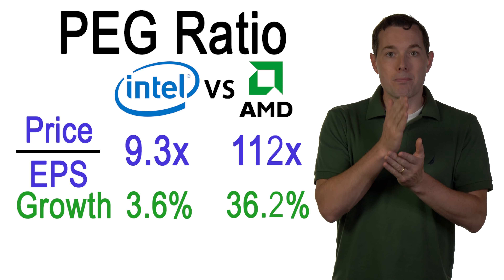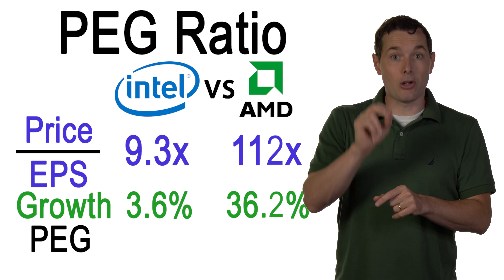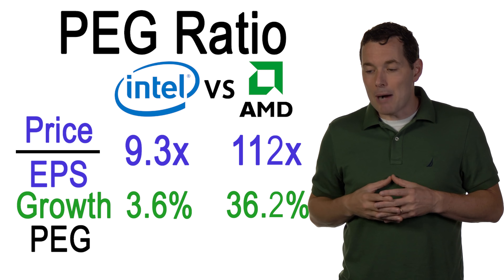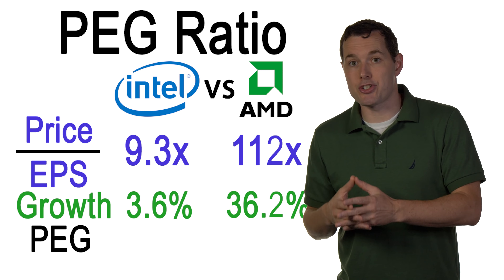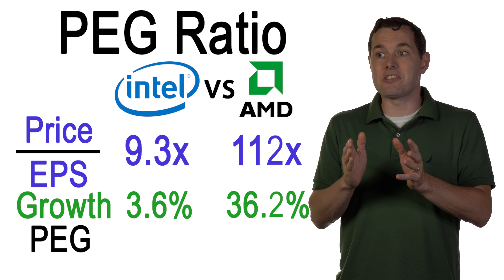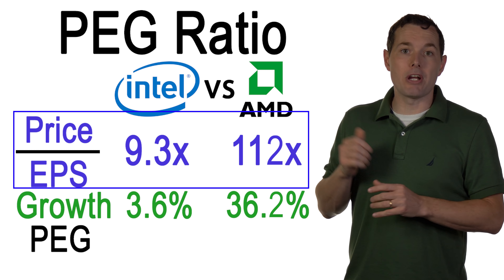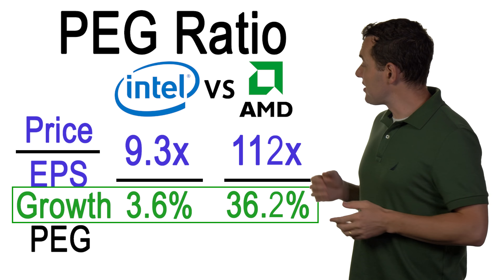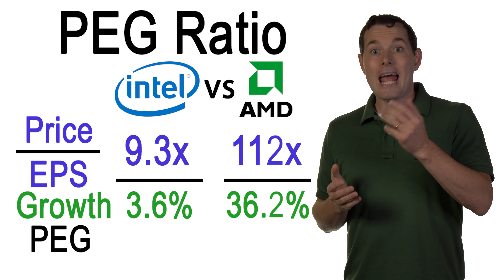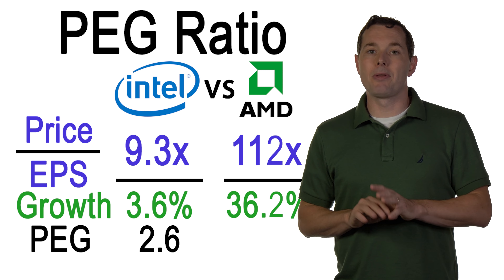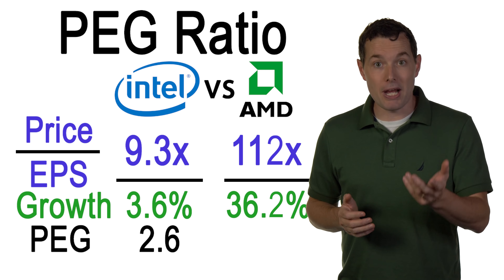Now we know that the price to earnings ratio is how much we're paying per unit of earnings. What the PEG ratio does — PEG, don't forget, is short for price to earnings growth — is it tells us how much we're paying per unit of expected growth. Essentially, the PEG ratio standardizes the PE ratio and adjusts it so you can compare different companies with different growth rates. All we do is take the PE ratio and divide that by the expected growth rate. So for Intel, we take the 9.3 PE ratio, divide that by the 3.6 percent expected earnings growth, and we end up with a PEG ratio of about 2.6. Now with AMD, we take the 112 divided by the 36.2 percent expected growth rate and we get a PEG ratio of 3.1.